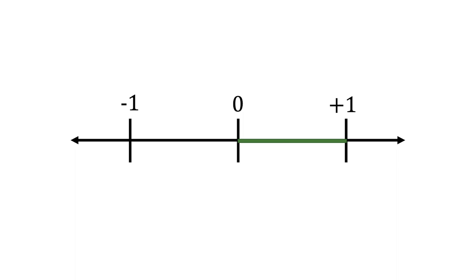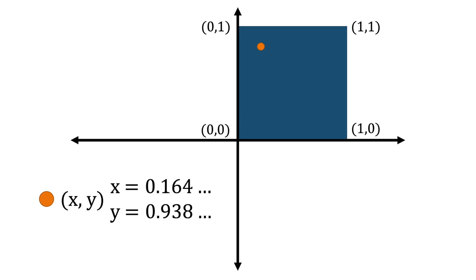For the longest time, mathematicians assumed dimension is simply how many numbers you need to describe where you are in a particular object. A line segment is one dimension because you need one number to describe where you are. A square is two dimensions because you need two numbers, such as an x and y coordinate, to describe a specific point.